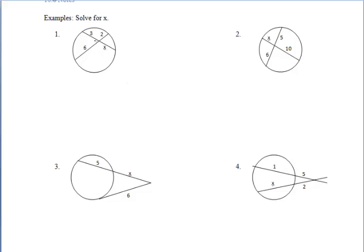For the first one, we should be thinking about the chord-chord power theorem. Remember, we're working with one chord at a time. So we can say that the yellow segment, which is 3, times the purple segment, which is x, must equal the product of the blue and red segments, which is 6 times 2. So we get 3x is equal to 12, which leaves us with the value of x to be 4.